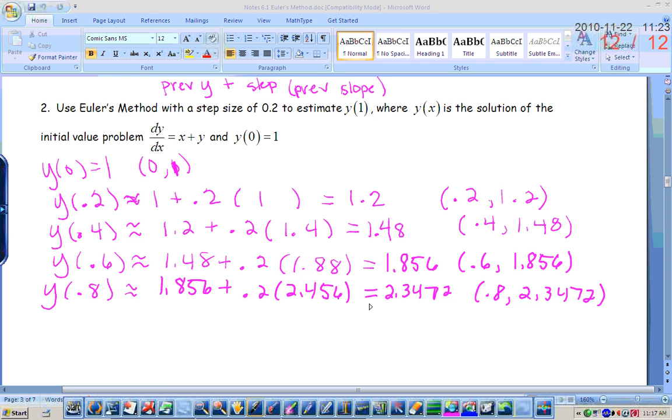In terms of the squiggly guys, you really need equal sign on the second one because what's in the middle and what's on the end do exactly equal each other. Well, our final goal is to figure out what y of 1 approximately equals. And we get 2.9, 7664. So the way you write your final answer is y of 1 is approximately 2.977.